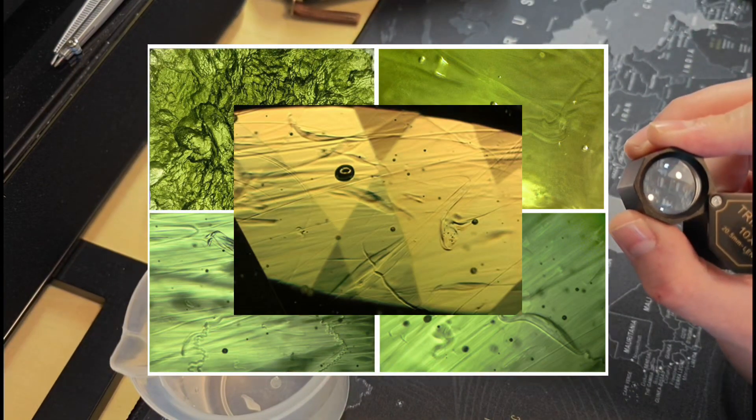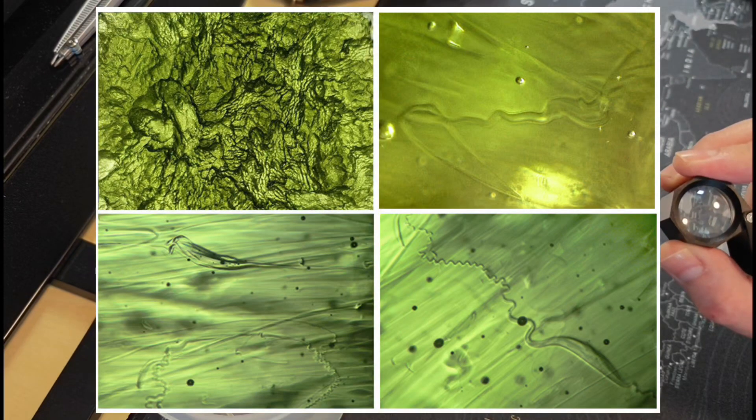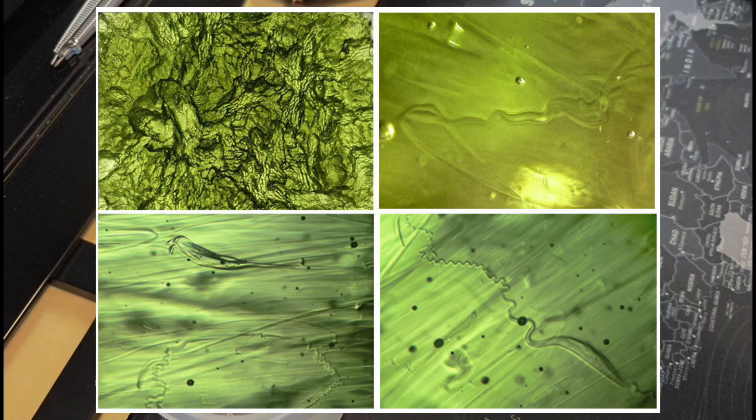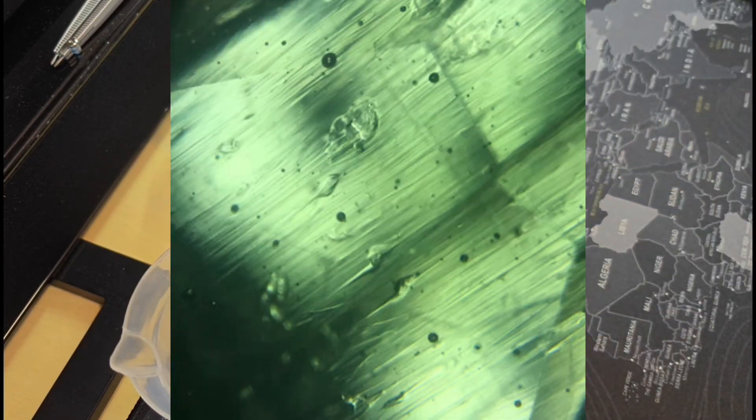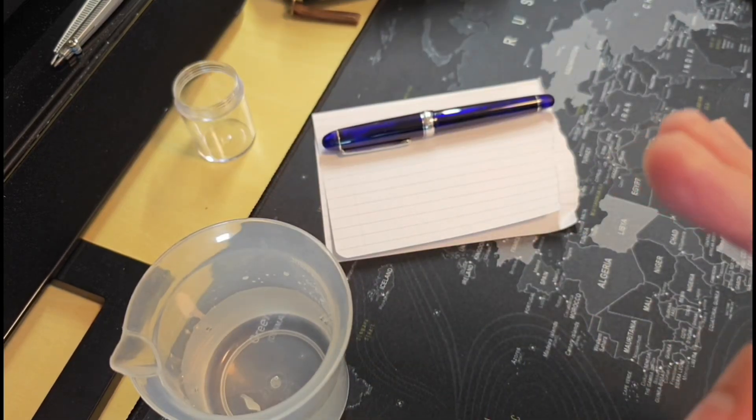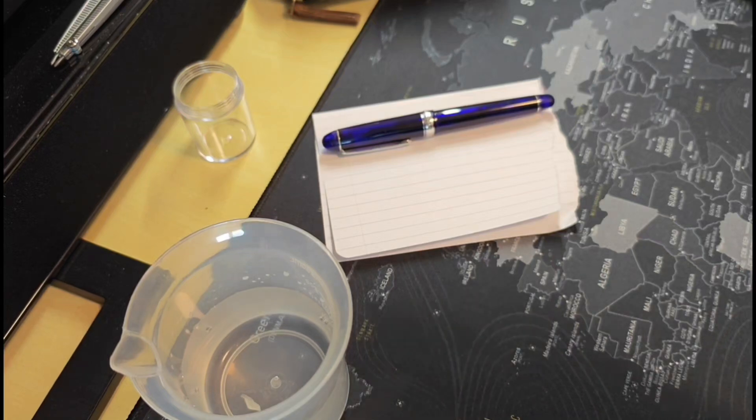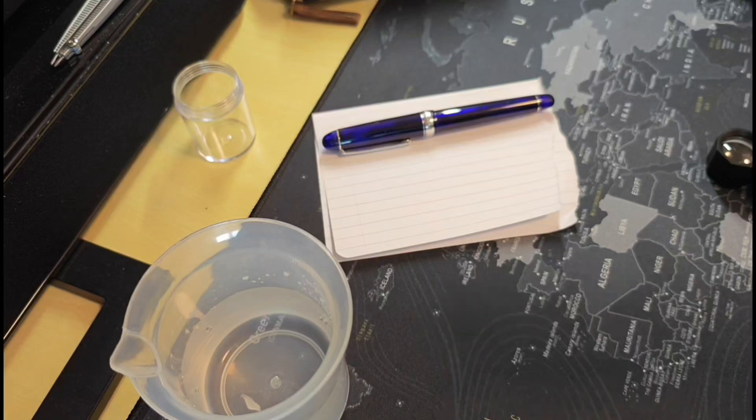And then you're going to look for these lechatelierite inclusions as well as small little bubbles. These bubbles, they can be any shape from round to slightly stretched or elongated. And if you can see a combination of bubbles that are inside of the stone, not just on the surface, as well as these lechatelierite inclusions, then that's all you have to do. If you can find these inclusions, great, your piece of Moldavite is already real and you can just skip the next step.